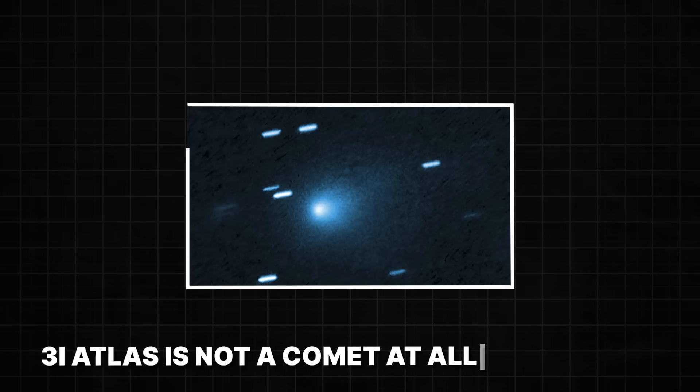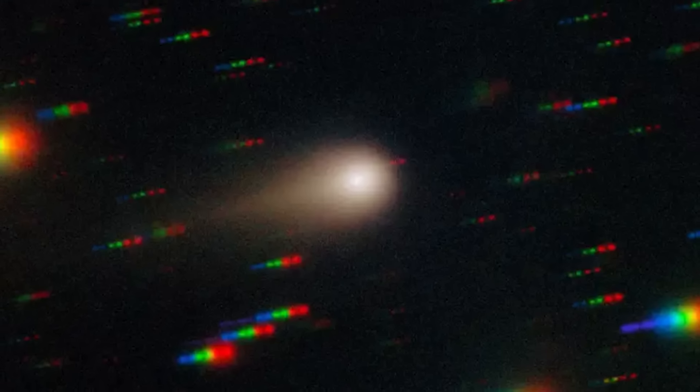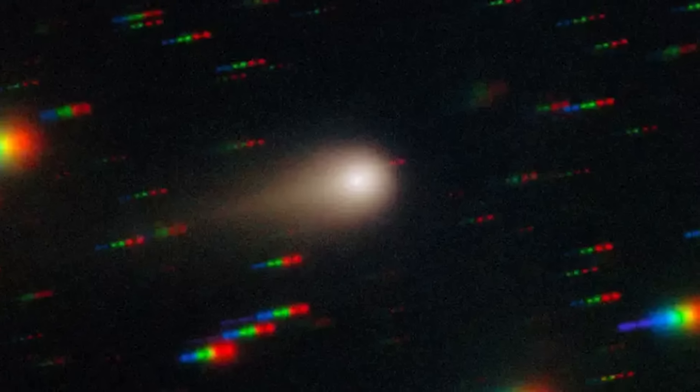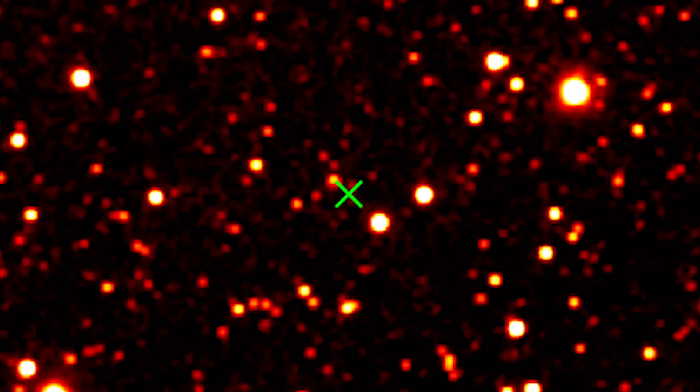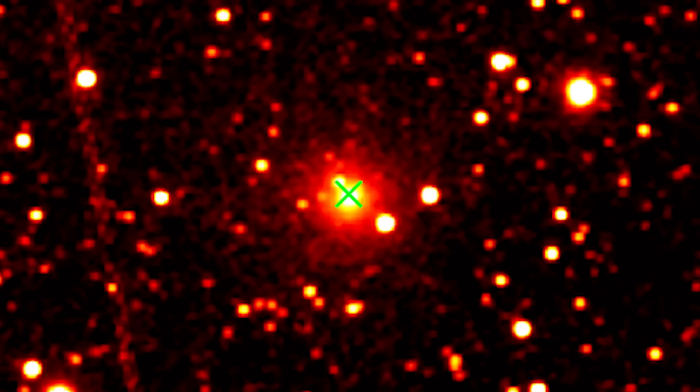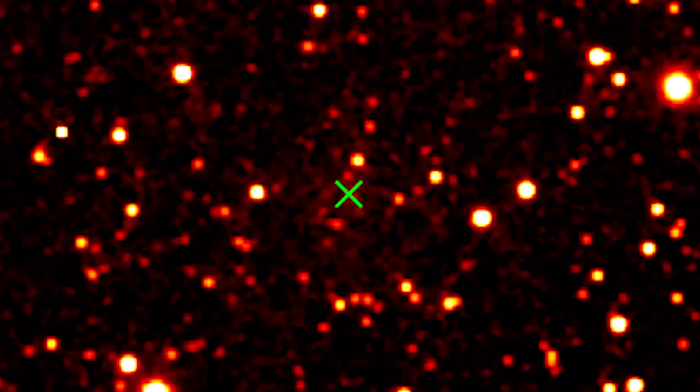One of the leading theories among those who are daring to think outside the box is that Three Eye Atlas is not a comet at all. It's an alien probe, a sentinel that has been silently observing us for who knows how long. The nuclear pulse could have been a warning, a shot across the bow to let us know that we've been noticed. Or perhaps it was a communication attempt, a cosmic hello from a civilization so advanced that we can't even begin to understand their language.